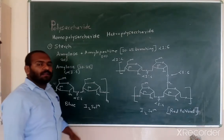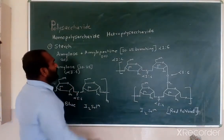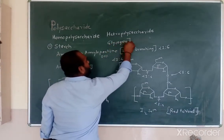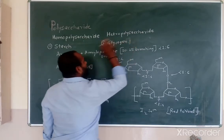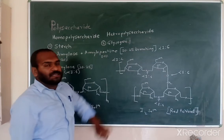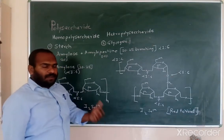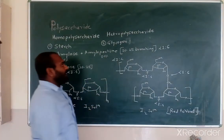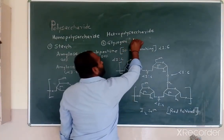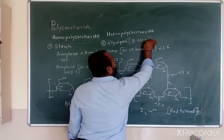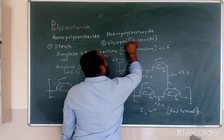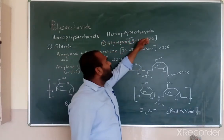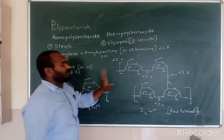In animals, the storage polysaccharide is glycogen. Glycogen is a storage polysaccharide in animals. It has a similar structure to starch, with the exception that branching is observed after every 8 to 10 units, making it more highly branched.